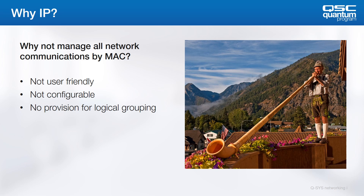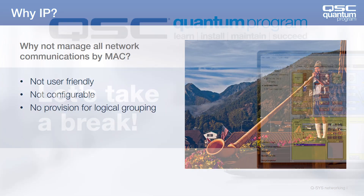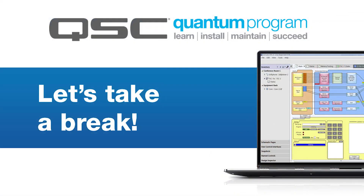We can use the same IP schemes for many internal networks and also create logical groups of machines that can share information. When we come back, we'll talk about how we can use subnets to make even smaller groups of machines within your network.